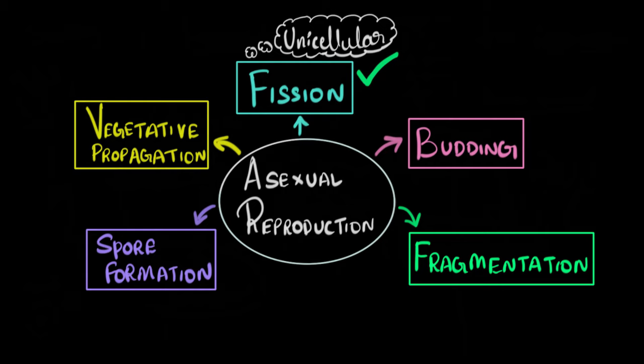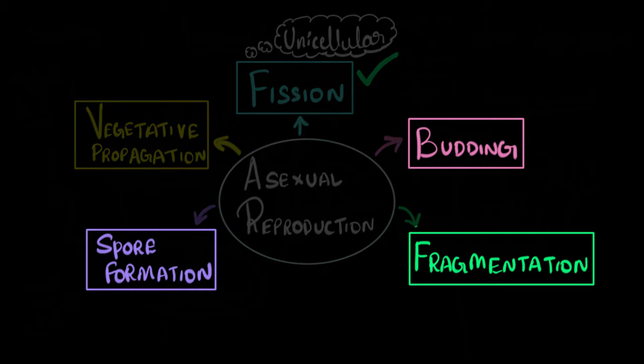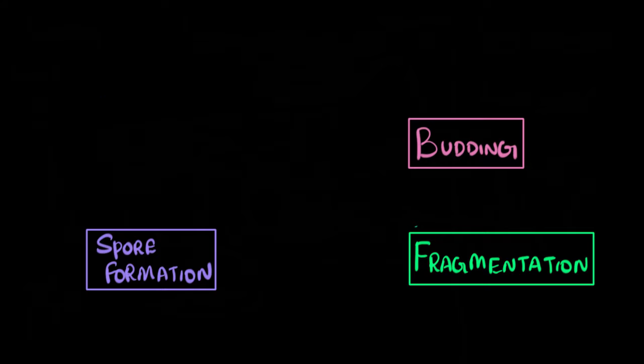Specifically, we're going to focus on these three: budding, fragmentation, and spore formation. In the next video, we'll talk about vegetative propagation in great detail. And if you're wondering, in a previous video, we have talked about fission. We've talked about binary and multiple fission in the previous video. So you can feel free to go and watch that if you missed that. Anyways, so let's talk about these three. And we're going to start with budding.